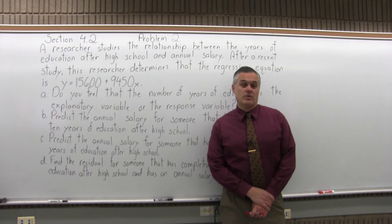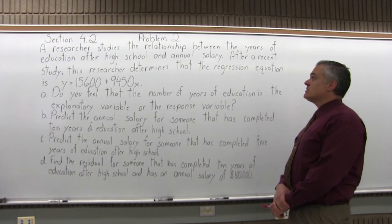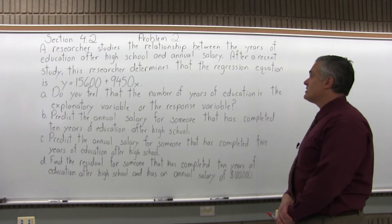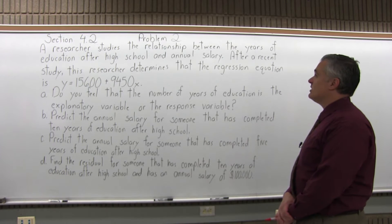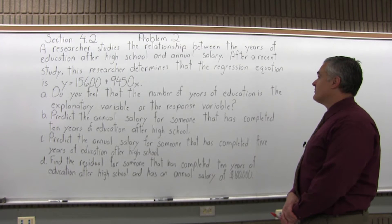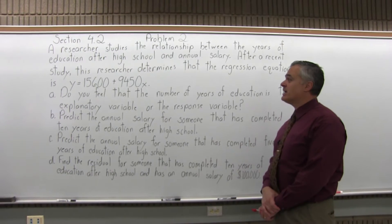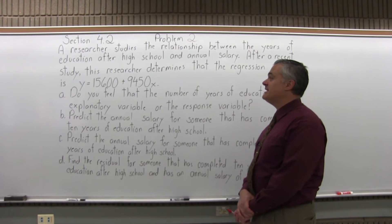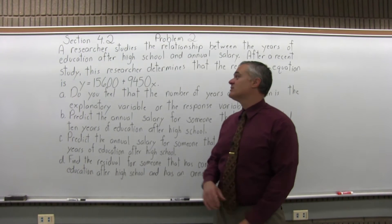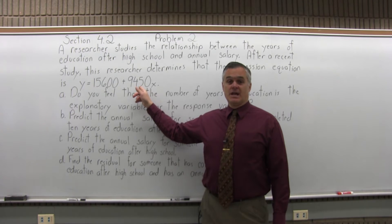This is Section 4.2, Problem 2. A researcher studies the relationship between the years of education after high school and the annual salary. After a recent study, this researcher determines that the regression equation is y equals 15,600 plus 9,450x.